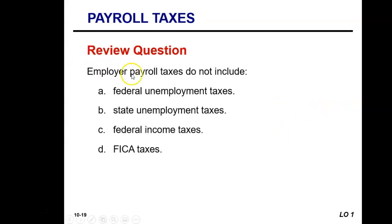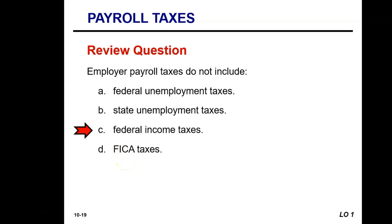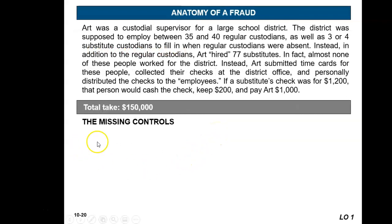Employer payroll taxes do not include which of the following — A, B, C, or D? The correct response is letter C. The employer has to match the FICA taxes withheld from the employee's earnings and must also pay federal and state unemployment taxes, but the employer does not match the federal income taxes withheld from the employee's earnings.